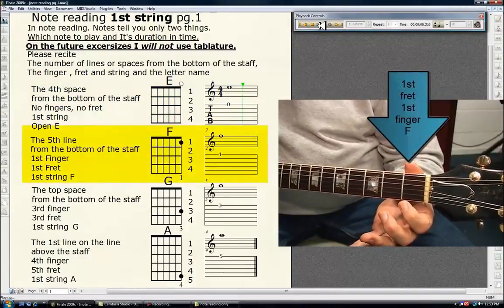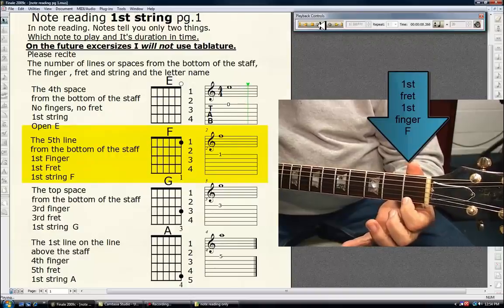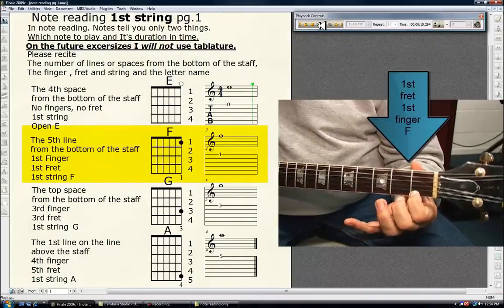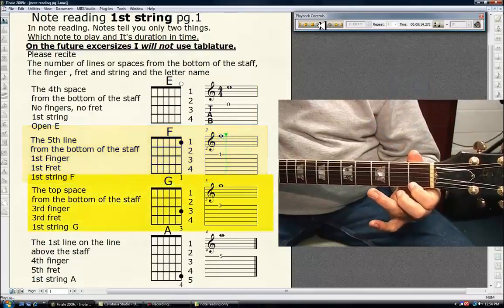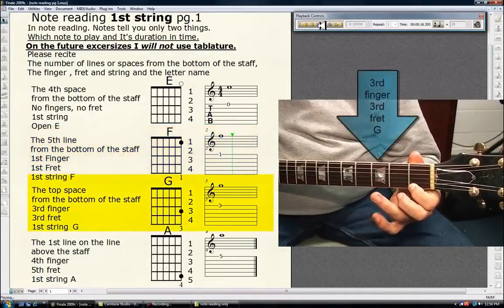bottom of the staff is the first finger, first fret, first string F. Next, the top space from the bottom